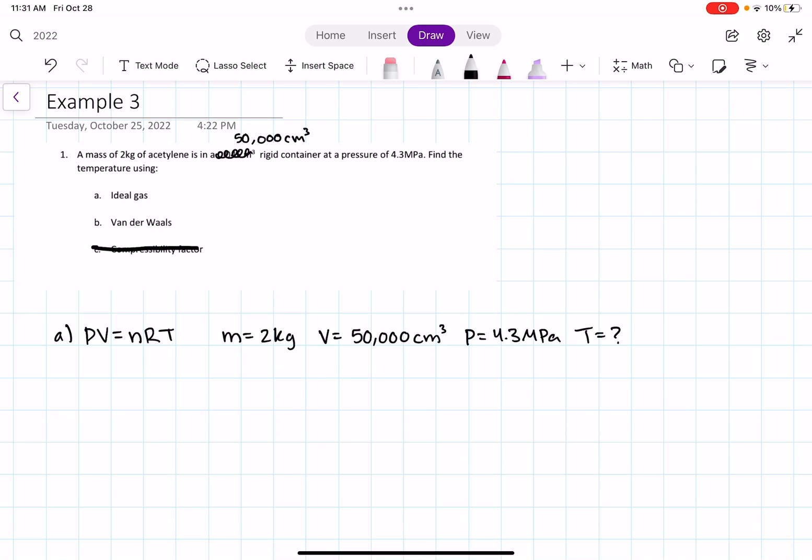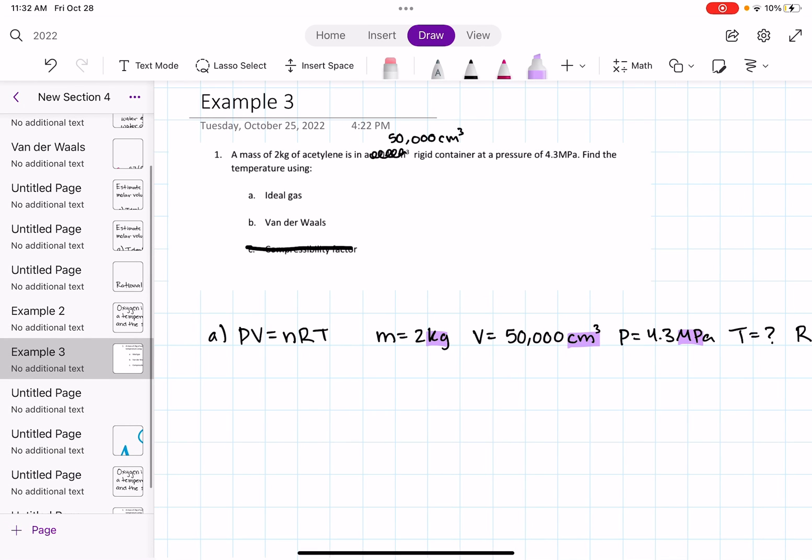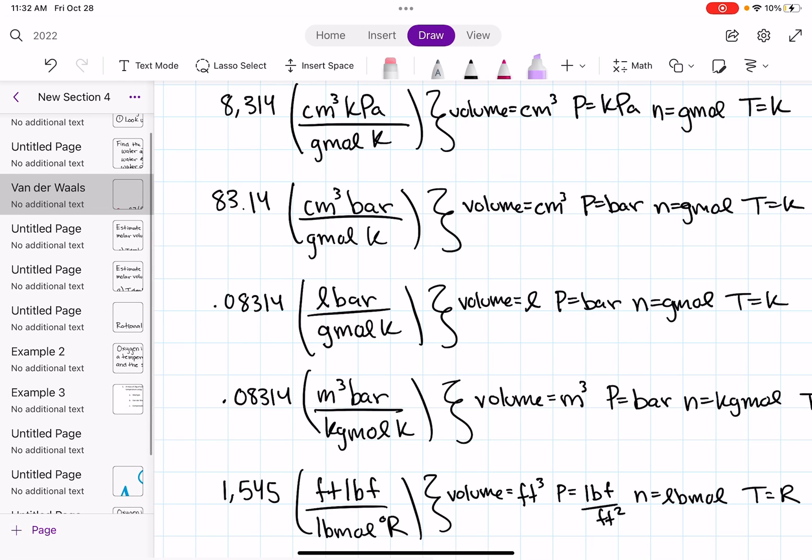Let's get started looking for our R value. Our R value has to match the units that are given to us in the problem or the units that we want to find. I see here that we have kilograms, centimeters cubed, megapascals, and we're going to want it in Kelvin.